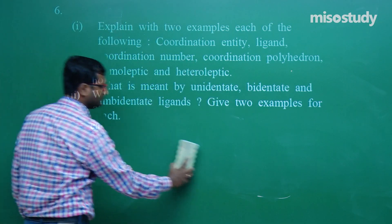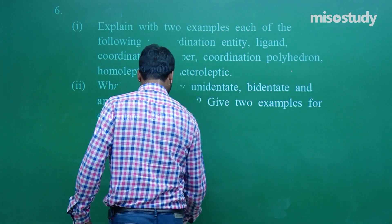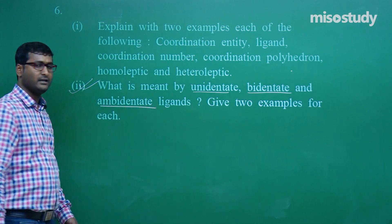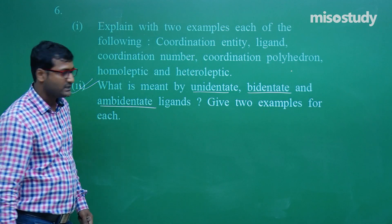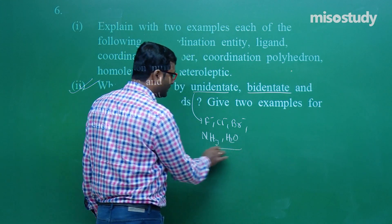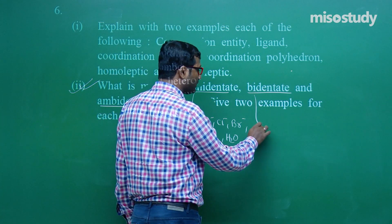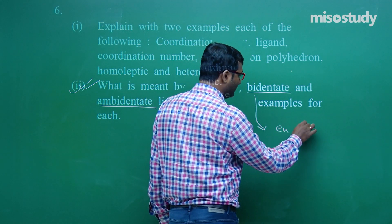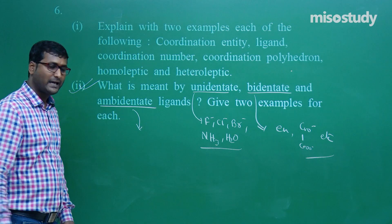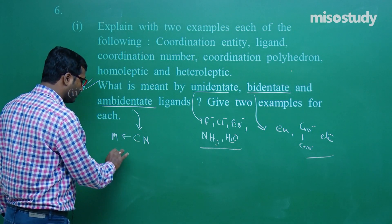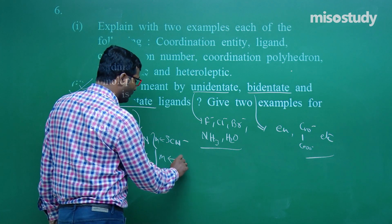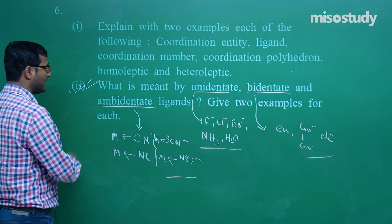Next question: What is meant by unidentate, bidentate, and ambidentate ligands? Unidentate: denticity is one — examples: F−, Cl−, Br−, NH3, H2O. Bidentate: denticity is 2 — examples: EN (ethylenediamine), oxalate ion. Ambidentate ligands: more than one type of donor atom is present, but only one donor atom donates its electron pair at a time. Examples: thiocyanato, isothiocyanato.